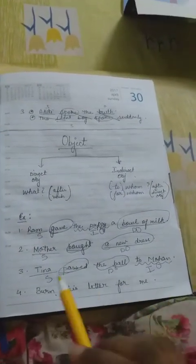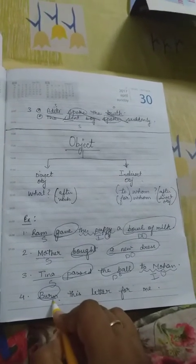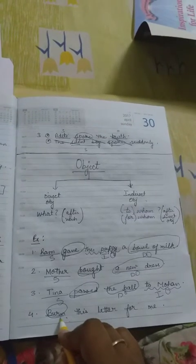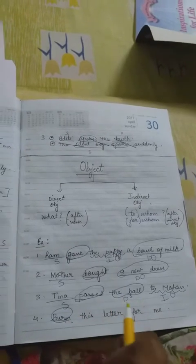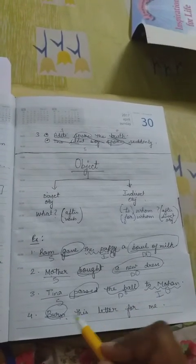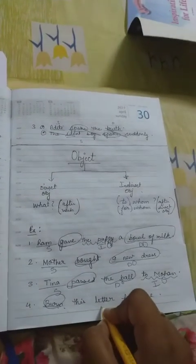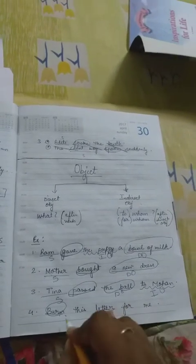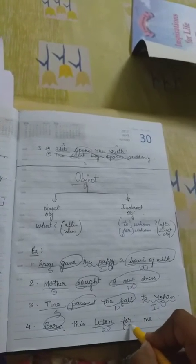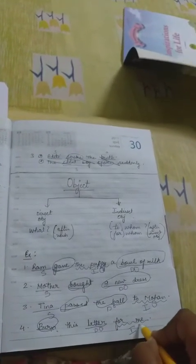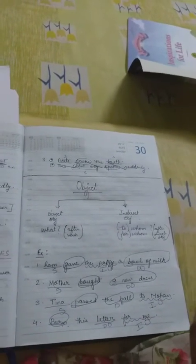Last example: Burn this letter for me. The verb is 'burn.' Burn what? The letter — so 'letter' is the direct object. And for whom? For me — so 'for me' is the indirect object. Notice that even here 'to' and 'for' are attached with the indirect object.